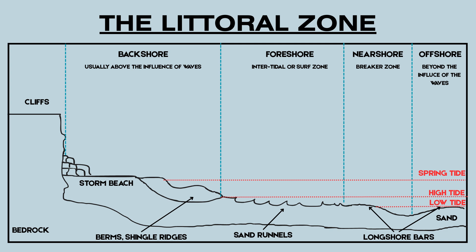The backshore lies above the high tide mark and is only affected by the sea during storms or very high tides. Features here include storm beaches formed by strong waves throwing pebbles inland, and berms or shingle ridges built up by gentler wave action. The foreshore, or intertidal zone, lies between high and low tide marks. It's where most wave and tidal action takes place, leading to constant erosion, deposition, and transport of material. You'll often find sand runnels here — small channels formed as water drains back to sea.